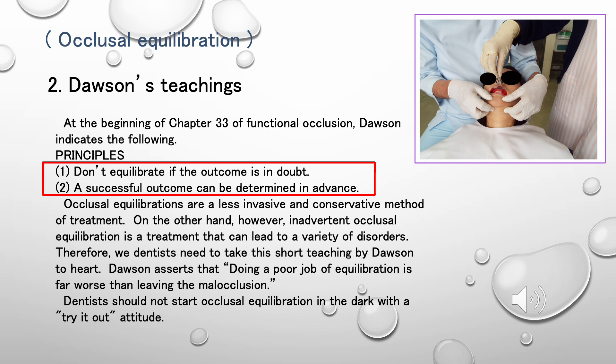Dawson's Teachings: At the beginning of Chapter 33 of Functional Occlusion, Dawson indicates the following principles. First: Don't equilibrate if the outcome is in doubt. Second: A successful outcome can be determined in advance. Occlusal equilibrations are a less invasive and conservative method of treatment. However, inadvertent occlusal equilibration is a treatment that can lead to a variety of disorders.